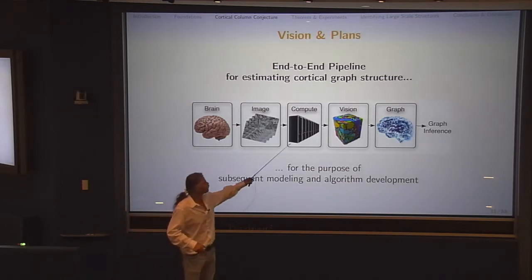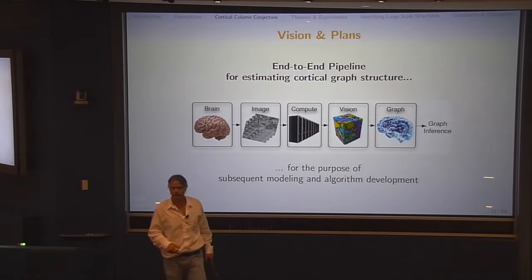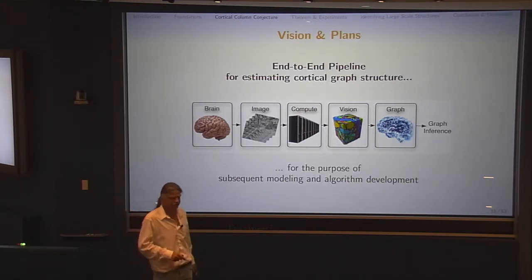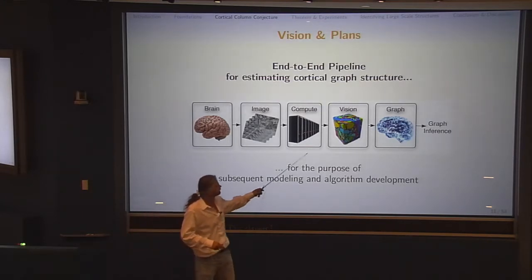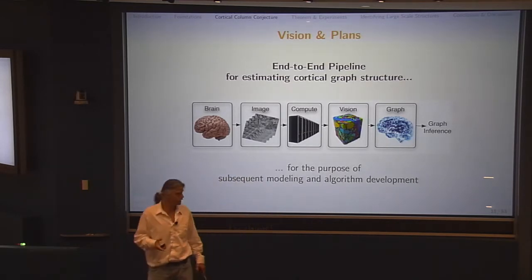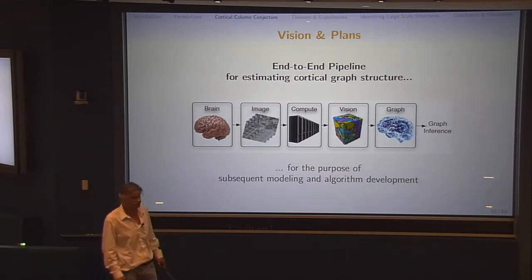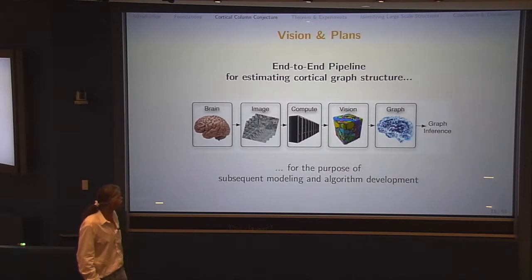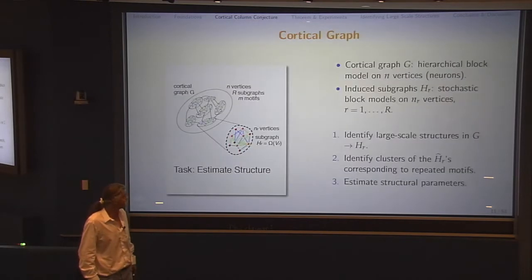We start with the brain. We do, say, electron microscopy. A cubic millimeter of cortex that might have 10 to the sixth neurons will produce a petabyte off the electron microscope. There's storage and compute problems, but they're not my problem. If you know Randall Burns, that's how I think of Randall. His children think of him as baseball coach, but I think he's basically a big compute engine, big storage and compute. We have to do computer vision to produce the graph.